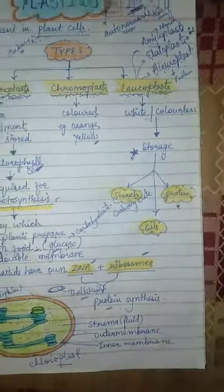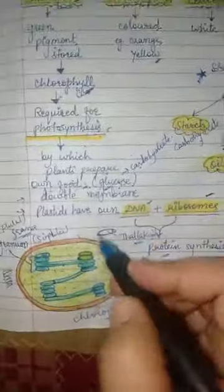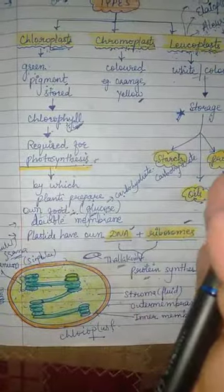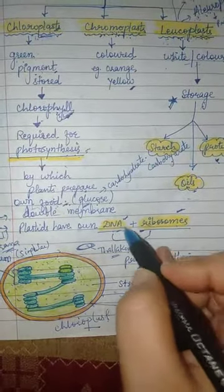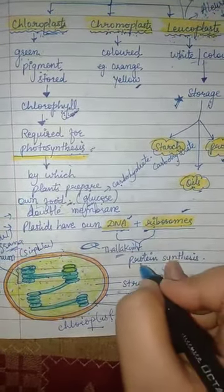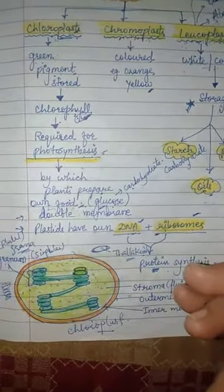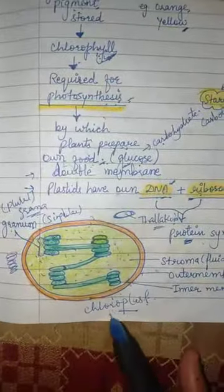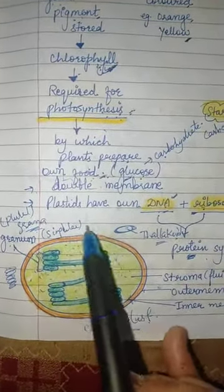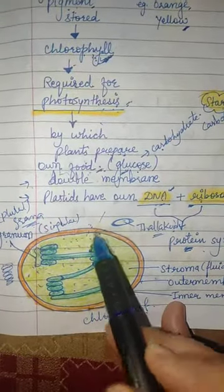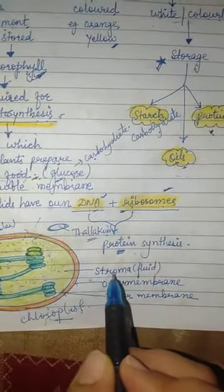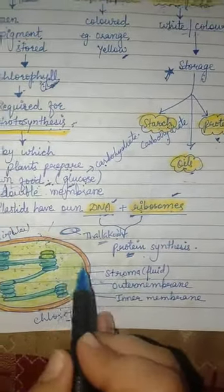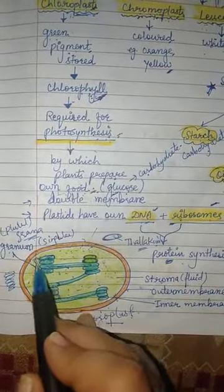As already mentioned, plastids are semi-autonomous cell organelles — they are double membranous, and have their own DNA and ribosomes, allowing them to synthesize their own proteins. Here is the structure of the chloroplast: it has an outer membrane and an inner membrane, and contains a fluid called stroma, similar to the matrix in mitochondria.